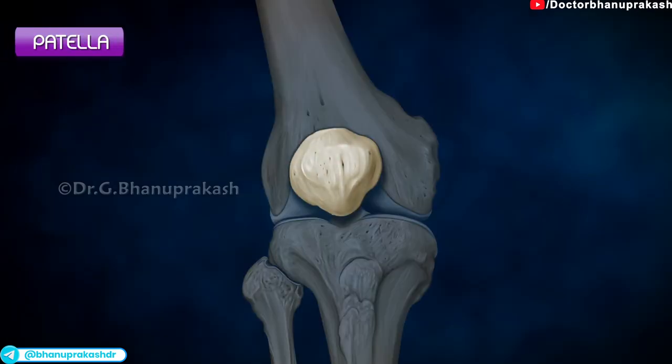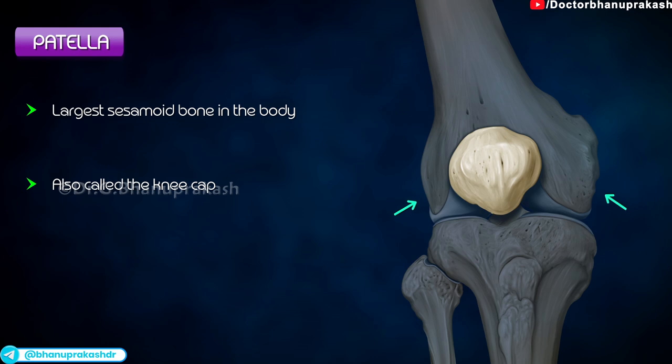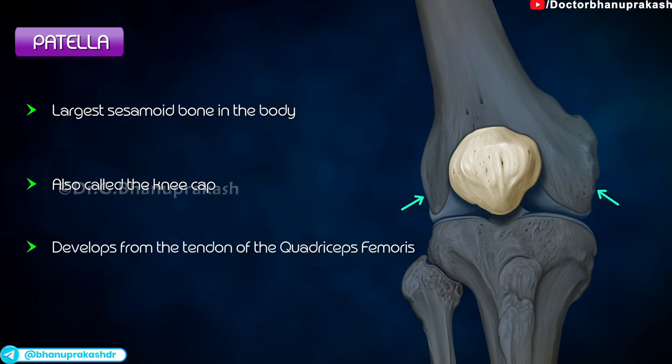Patella. It is the largest sesamoid bone in the body and is also called the kneecap. It is situated in front of the femoral condyles and develops from the tendon of quadriceps femoris.